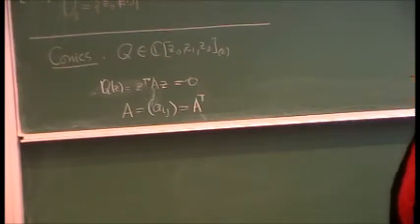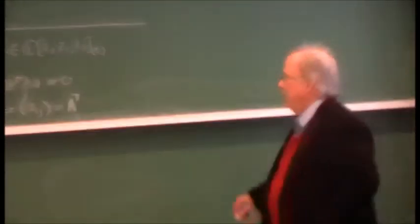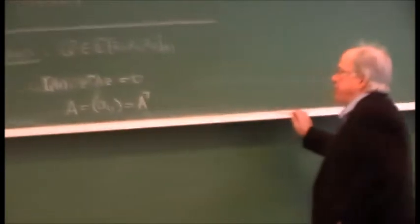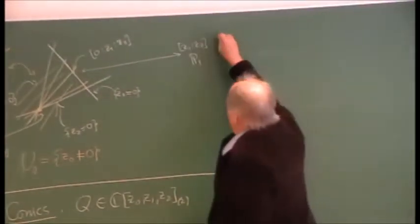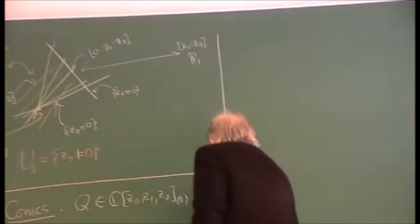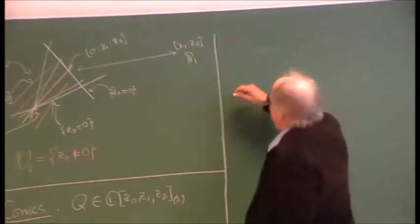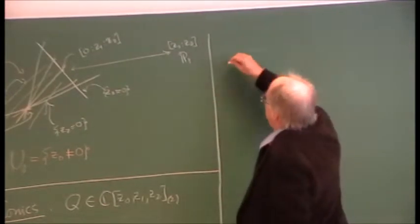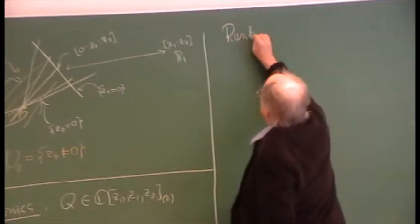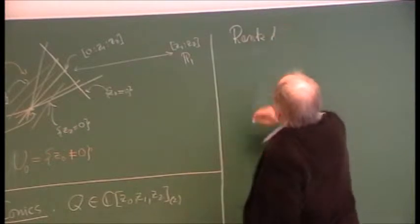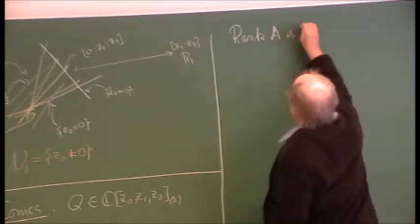A quadratic polynomial is exactly a quadratic form — nothing more. You know them all. And you know from the first course in algebra that the rank of the matrix A is the only invariant.